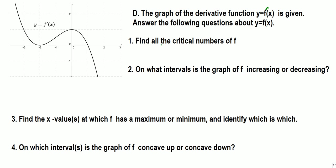First, find all the critical numbers of f — that means find the x values where the derivative is 0. So this is the derivative function, and the derivative becomes 0 at x equals negative 2 and x equals 1, because anything above 0 is positive and below is negative. These are the critical numbers.